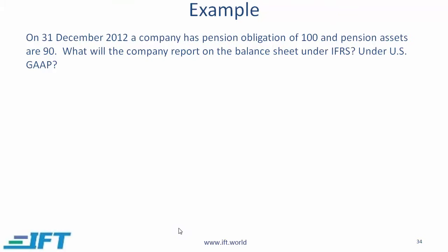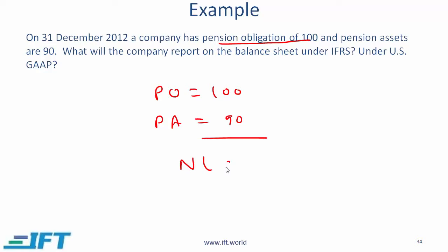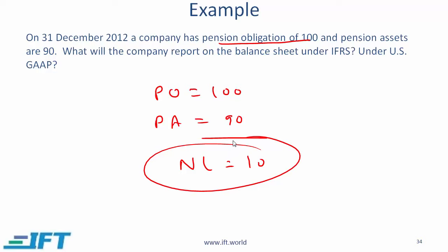Here is an example: if the pension obligation equals 100 and plan assets equal 90, we have a net liability of 10. Under both US GAAP and IFRS, the balance sheet shows a net pension liability of 10, and then the footnotes and disclosures provide detail about where this figure comes from.